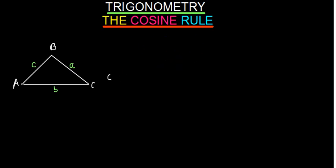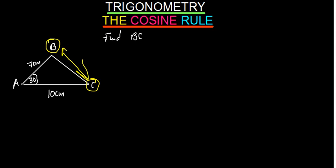Let's see how we get to use it. Let's say we have been told that this side here is 7 centimeters, and this side here is 10 centimeters, and we have been given that this angle is 30 degrees. And then they ask: find BC. So this side is what we want to find, that is BC. Now, since A is pointing to BC, we can say BC is small a. So how do you find small a? If you find small a, that is BC.